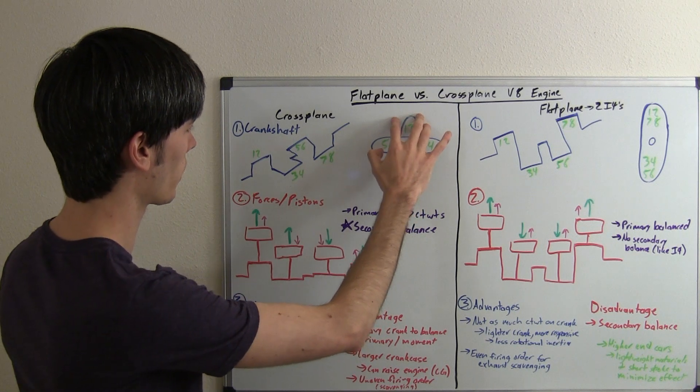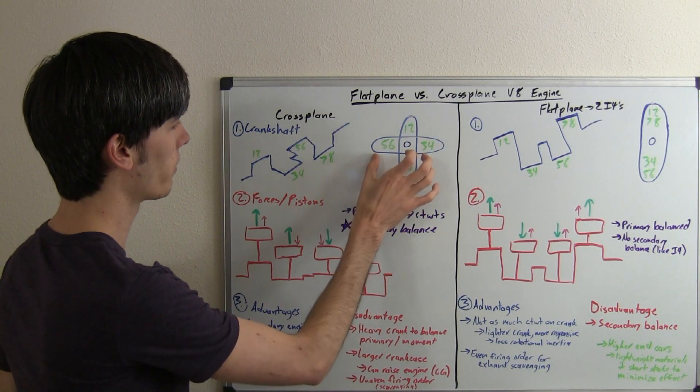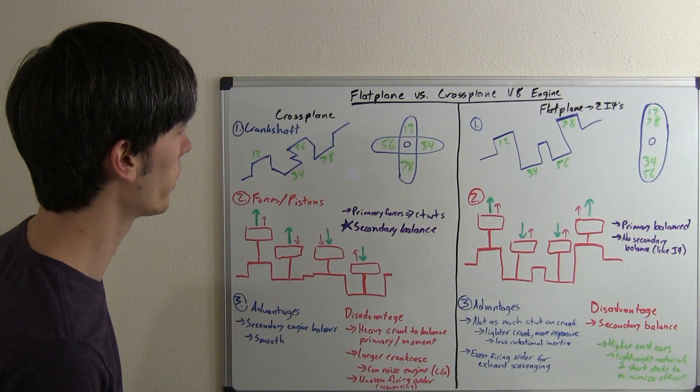you're going to have cylinders 1 and 2 connected up at the top, cylinders 7 and 8 connected down to the bottom, 5 and 6 on the left, 3 and 4 on the right, just like we've drawn here.